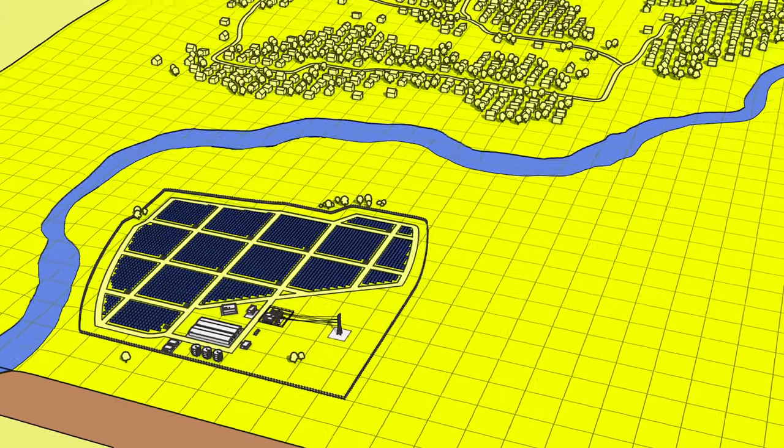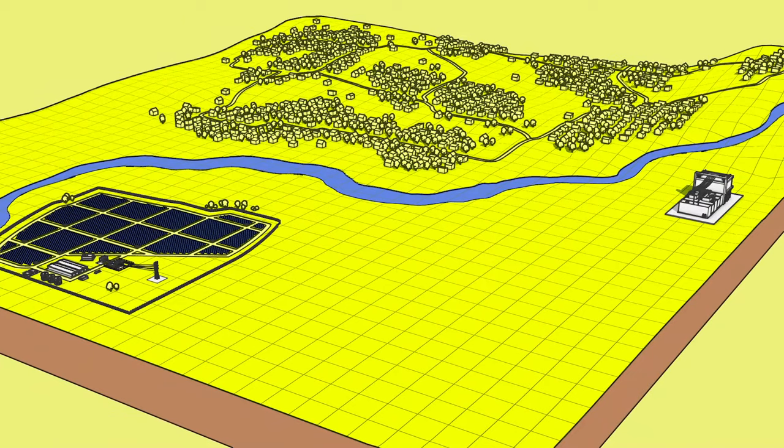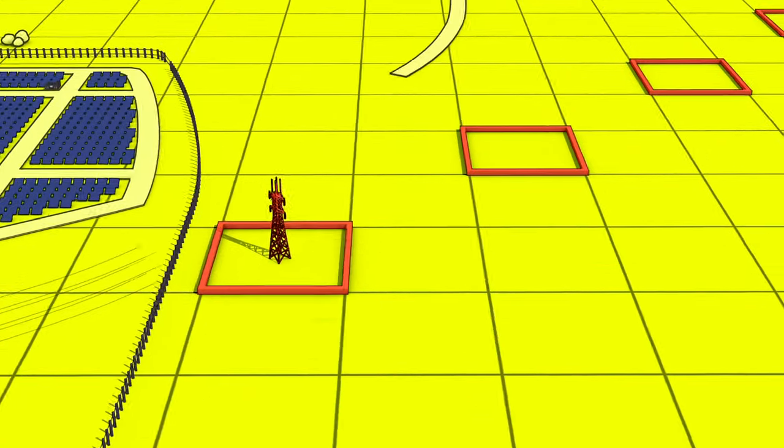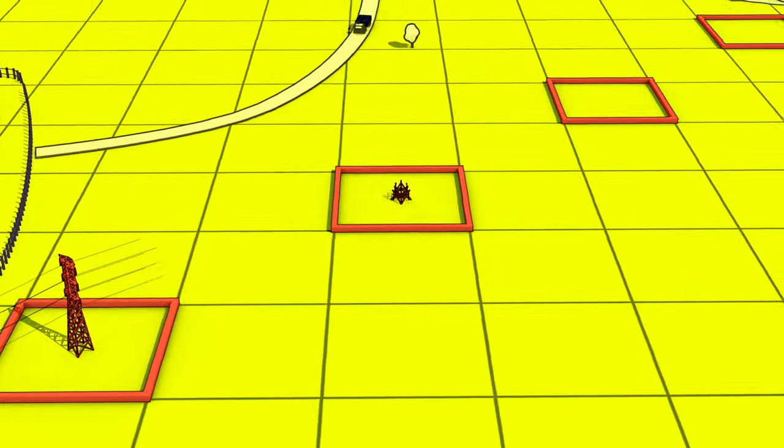If the project is far away from the main transmission lines, additional land must be acquired to establish the connection to the power grid. And especially during construction, access roads need to be upgraded or newly built.